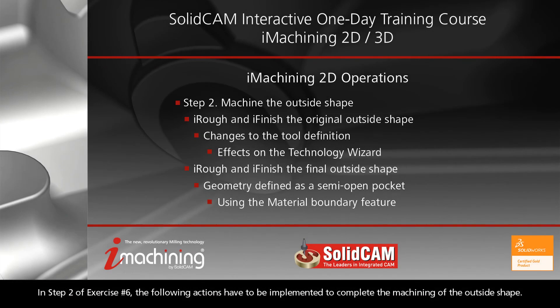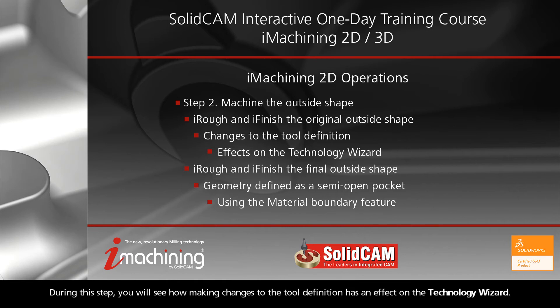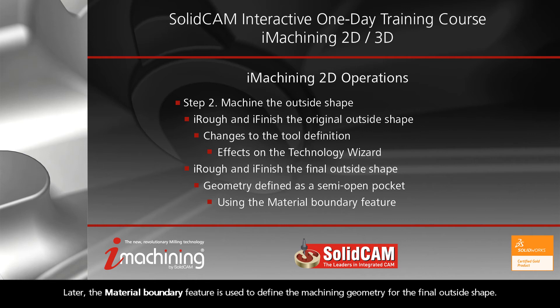In step 2 of exercise number 6, the following actions have to be implemented to complete the machining of the outside shape. During this step, you will see how making changes to the tool definition has an effect on the technology wizard. Later, the material boundary feature is used to define the machining geometry for the final outside shape.